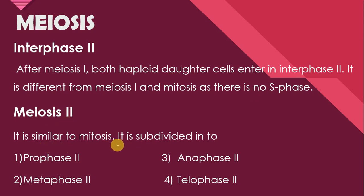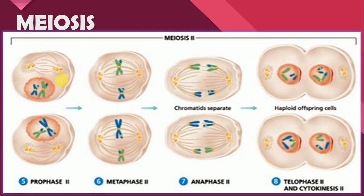Meiosis 2 is similar to mitosis. It is divided into phases like Prophase 2, Metaphase 2, Anaphase 2, and Telophase 2. Prophase 2 is similar to the prophase of mitosis: duplication of centrosomes occurs, both centrosomes move to the opposite poles of the cell, nuclear envelope disintegrate hona start ho jata hai, nucleolus disappear hone lagtay hain. Metaphase 2 mein chromosomes cell ke equator par khud ko spindle fiber se attach karke metaphase plate form karte hain. Then in Anaphase 2, similar to the anaphase of mitosis, chromatids get separate from each other and move to the opposite poles of the cell.